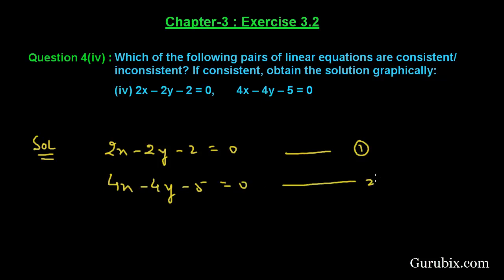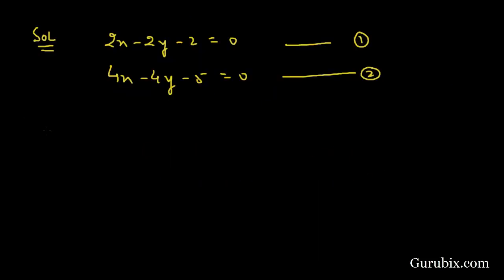Now we shall calculate A1 over A2. Here we have 2 over 4. B1 over B2, that is minus 2 over minus 4, which equals 1 over 2. And C1 over C2 equals minus 2 over minus 5, which means 2 over 5.